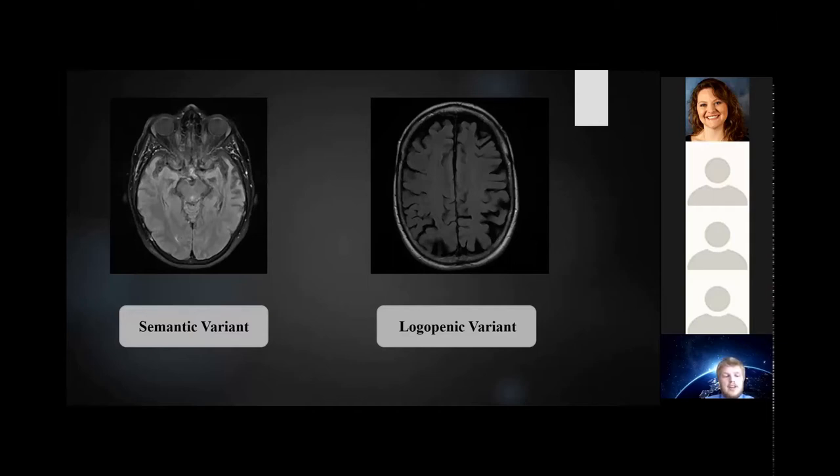The temporal parietal junction is the site of degeneration in the logopenic variant. In terms of speech functions, logopenic patients tend to make phonetic errors when identifying things. For example, you might show them a picture of a cat and ask them to identify it, but instead of saying cat, they say bat or rat. So they substitute that first letter.